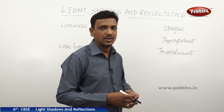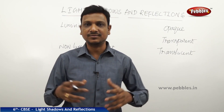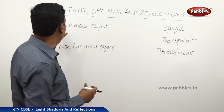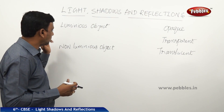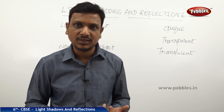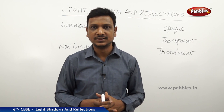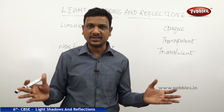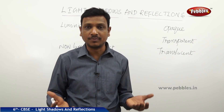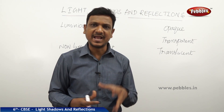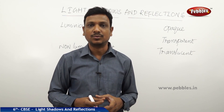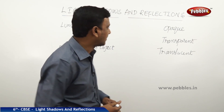When we talk about light, shadows and reflections, we need to know the meaning of certain terms. Let's look at luminous objects and non-luminous objects. If any object or body is able to produce light of its own, you call it a luminous object or luminous body. Anything that produces light on its own — it is emitting the light. The Sun is the best example.